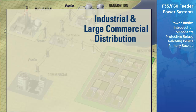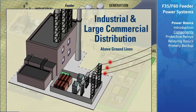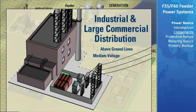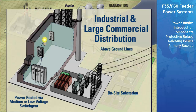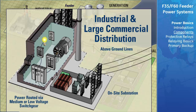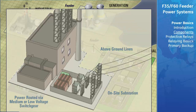From the substation, industrial or commercial power lines take the power above or below ground to a large transformer, which steps the three-phase voltage down to a suitable level for the plant or building. For larger commercial or industrial users, this voltage may be in the medium voltage range, and in that case there will be an additional substation on site. The power is then routed from the transformer via medium or low-voltage switchgear to different areas of the plant or building for further distribution via switchboards and panel boards.